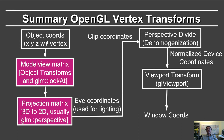Then you define the model view matrix, which includes the object transformations to place the objects properly in the world, as well as the glm lookAt command, which you've implemented in homework 1. Then you go through the projection matrix, which goes from 3D to 2D, which is usually glm perspective. The shaded boxes are what you've already implemented in homework 1 and also in homework 2. That gives you the eye coordinates used for lighting.